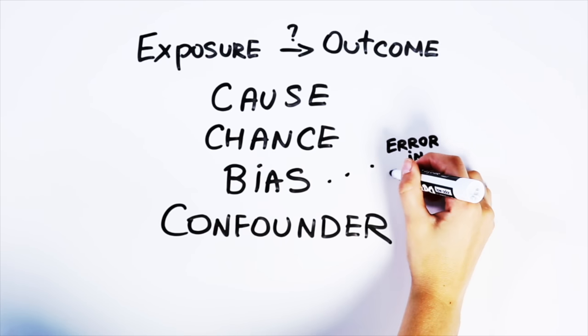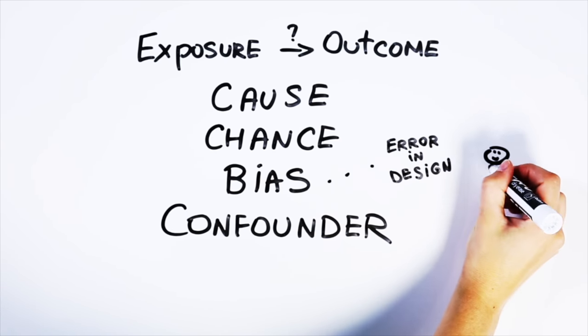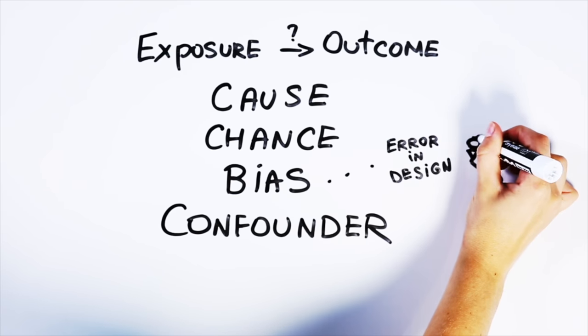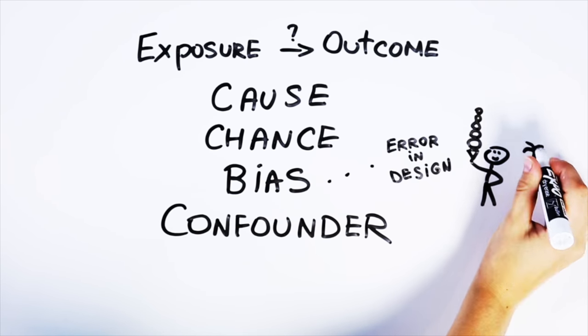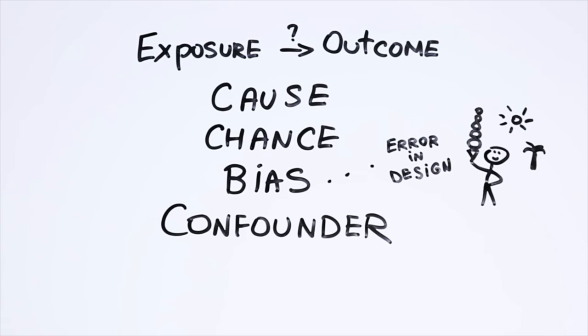Bias can come about because of errors in how a study is designed. For example, if we observe only people who eat a lot of ice cream and live in really hot sunny areas, and don't include anyone else that doesn't eat so much or live elsewhere, the association between ice cream eating and getting sunburn will seem very strong. In other words, the results will be misleading. They'll be biased toward a particular, and in this case, wrong conclusion.